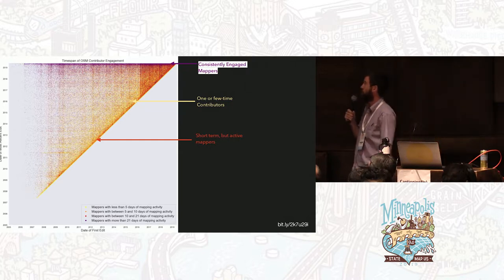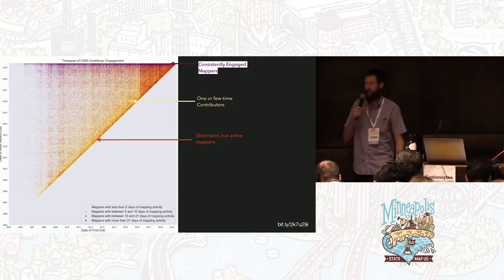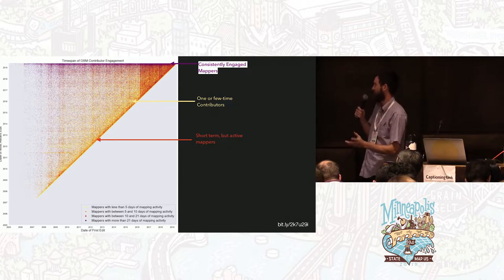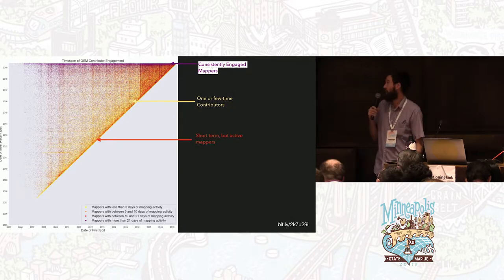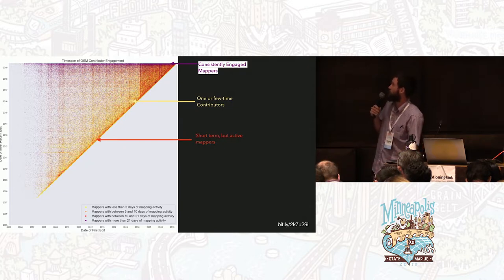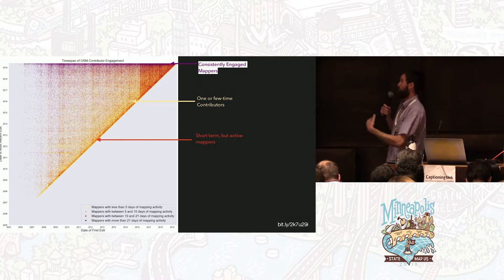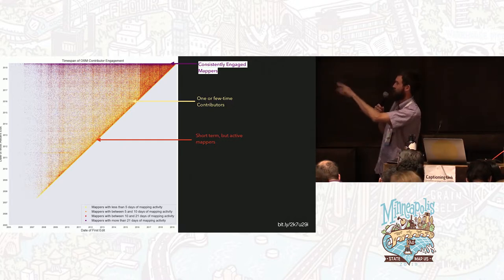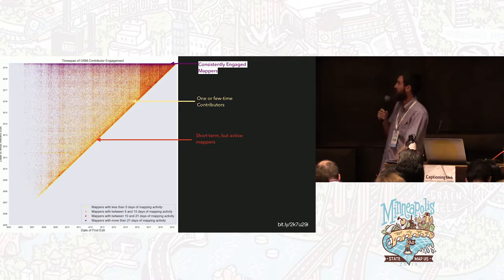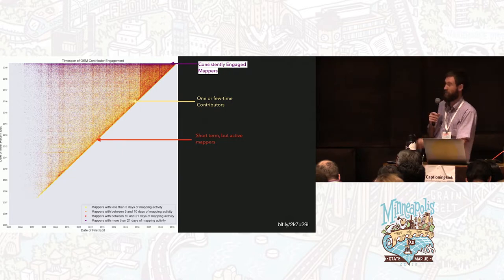We can do it for all 1.1 million users who've made a contribution to OSM. Along the diagonal we see a lot of red, representing mappers with between 5 to 20 days of mapping — joining and mapping a lot over multiple days like two weeks, but then not coming back. The thick purple line across the top represents users who joined over the years and whose most recent edit was basically when we pulled the data — consistently continuing to map. The yellow areas are one-time contributors showing up, doing a little bit of mapping, and not returning.